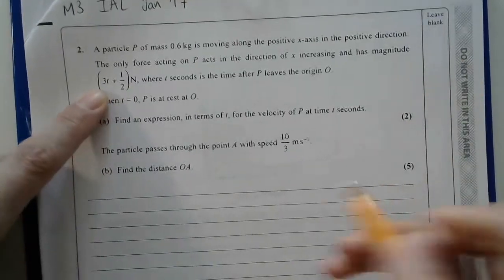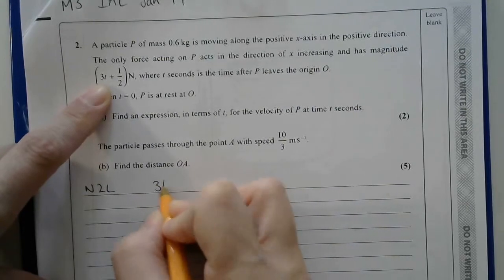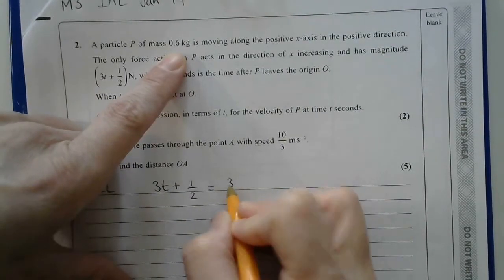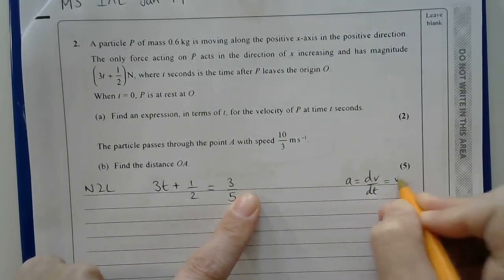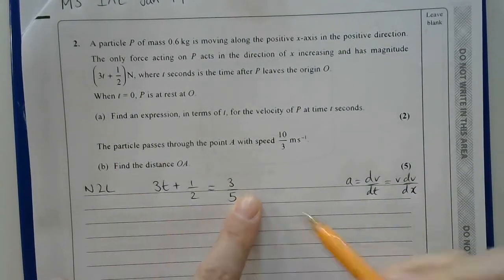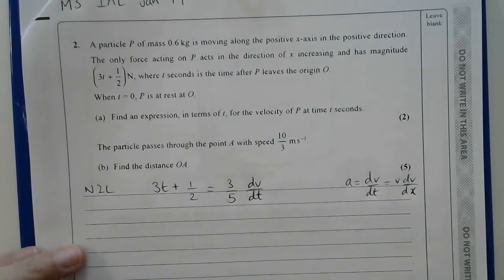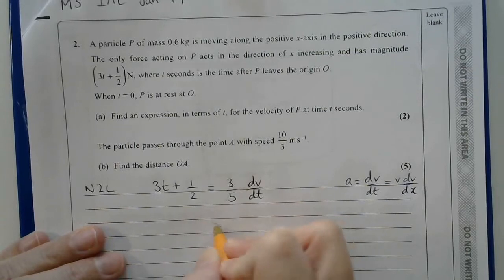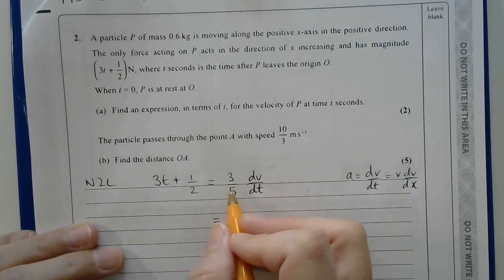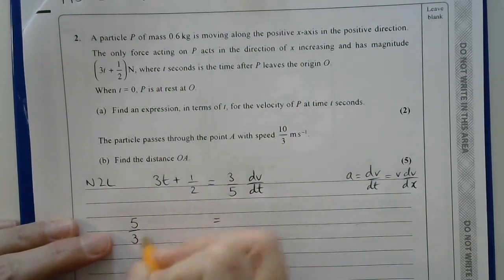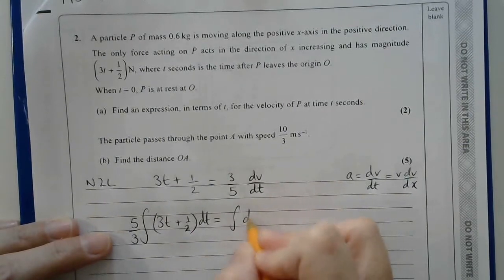This is the force, so I can use the equation with force in, that the resultant force is the mass times the acceleration. So I have resultant force is equal to the mass, and 0.6 is 3/5, multiplied by the acceleration. Now for the acceleration, I can use dv/dt, or I could use v dv/dx. And in this case, because they gave me the force in terms of t, I'm going to use dv/dt.